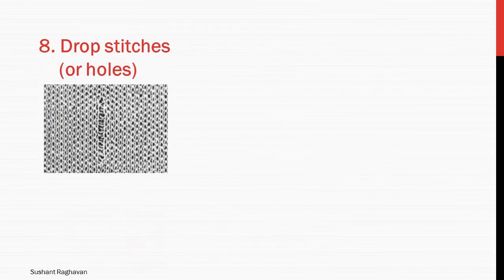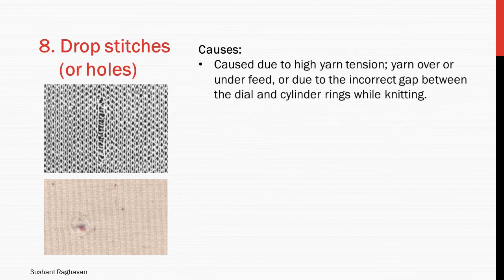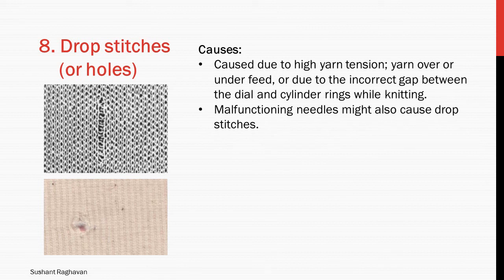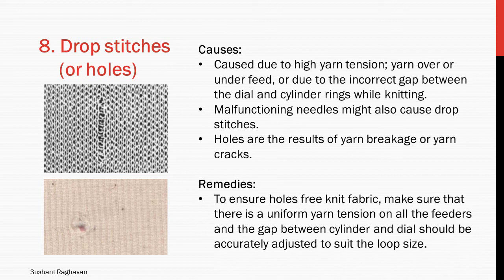Drop stitches or holes. Causes: caused due to high yarn tension, yarn over or under feed, or due to the incorrect gap between the dial and cylinder rings while knitting. Malfunctioning needles might also cause drop stitches. Holes are the result of yarn breakage or yarn cracks. Remedies: ensure uniform yarn tension on all the feeders, and the gap between cylinder and dial should be accurately adjusted to suit the loop size.